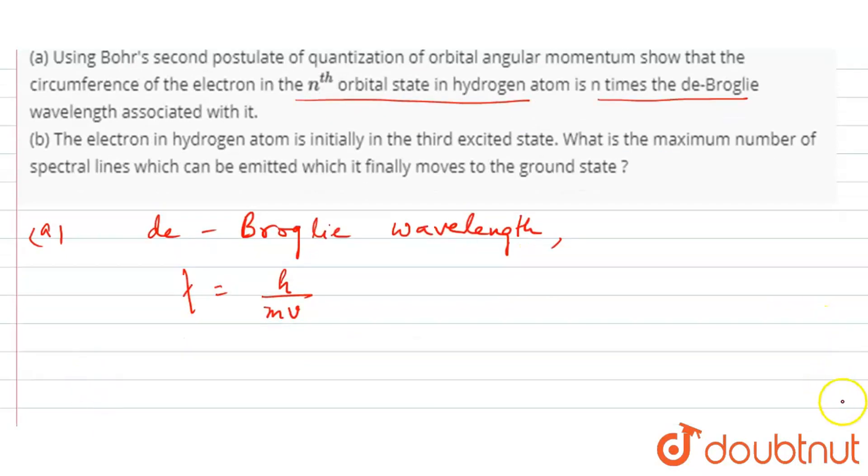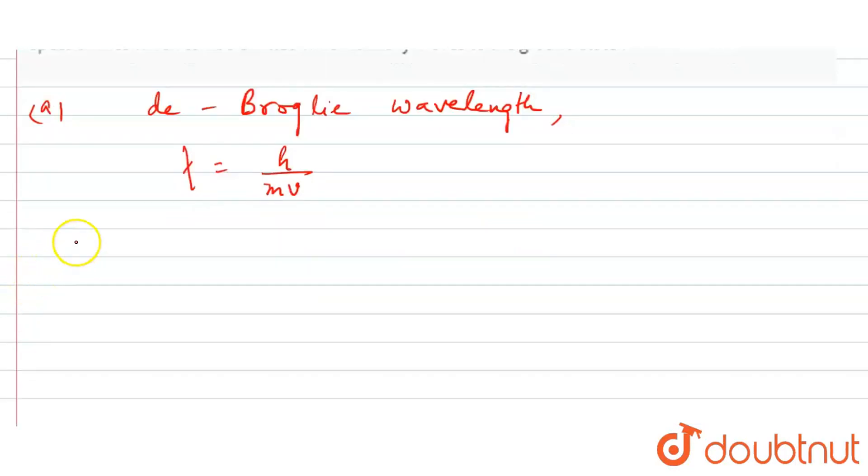Now, Bohr's second postulate. Using Bohr's second postulate, what happens? For n orbital, ln equals to mvn rn equals to n h by 2 pi. Now let's express this: 2 pi rn equals to n h by mvn.